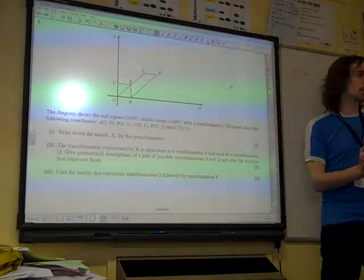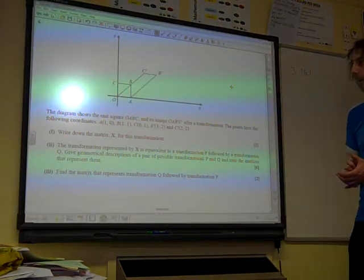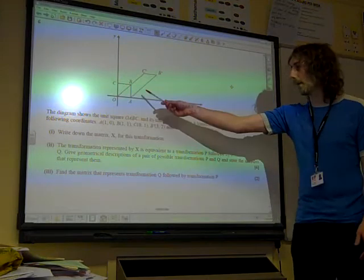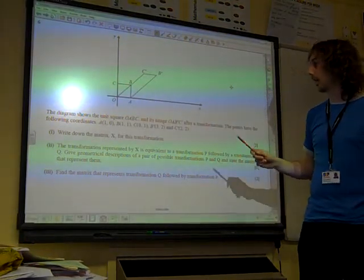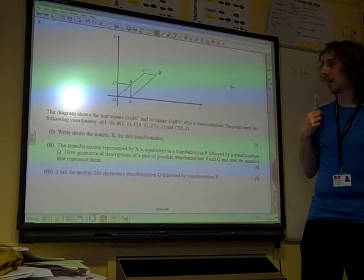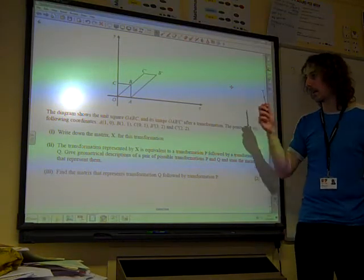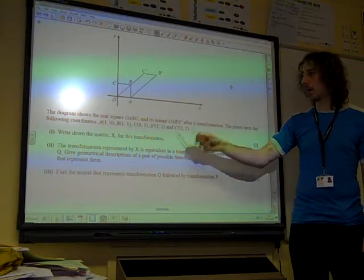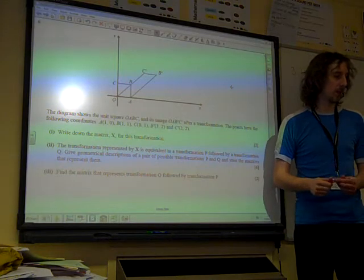Okay, so the transformation matrix question. The diagram shows the unit square and its image after transformation. Points have the following coordinates given by those. Write down the matrix X for this transformation.